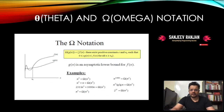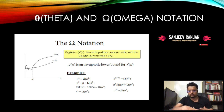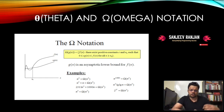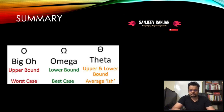Omega notation represents the best case complexity, which we generally don't focus on much. You just need to remember that whenever we talk about best case complexity, it is omega notation. These are all part of the complexity notations but best case scenarios are typically less useful in practice.